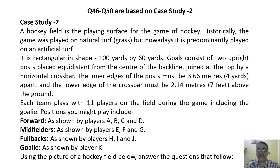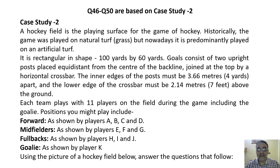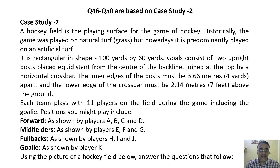Case Study 2: A hockey field is rectangular in shape, 100 yards by 60 yards, played on natural or artificial turf. The goal consists of two upright posts equidistant from the center of the back line, joined by a horizontal crossbar. The inner edges of the posts must be 3.66 meters apart and the lower edge of the crossbar must be 2.14 meters above the ground. Each team plays with 11 players including the goalie.